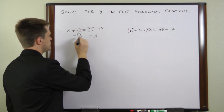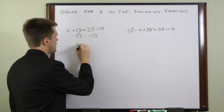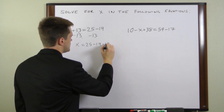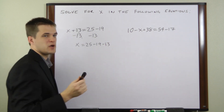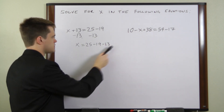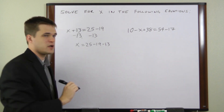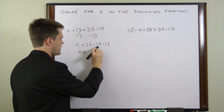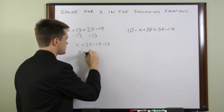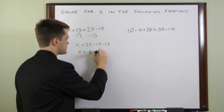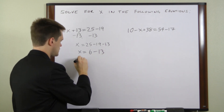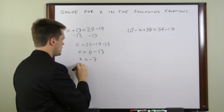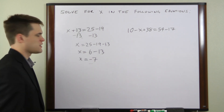This will cancel, and what we're left with is x equals 25 minus 19 minus 13. Let's do these one at a time: 25 minus 19 is 6, so x equals 6 minus 13. And 6 minus 13 equals negative 7. So in this equation x equals negative 7.